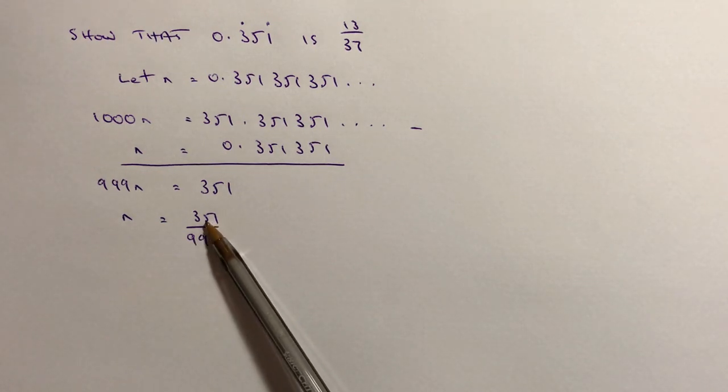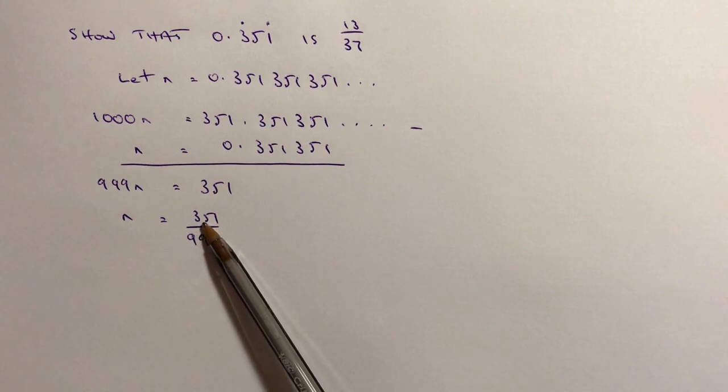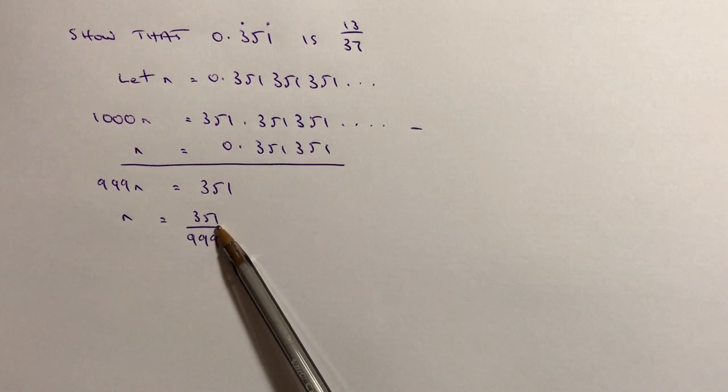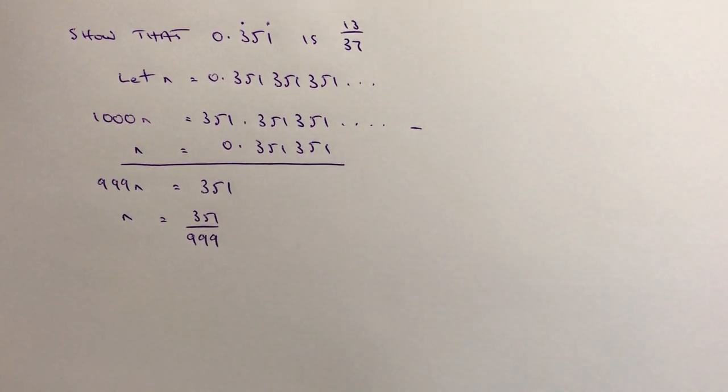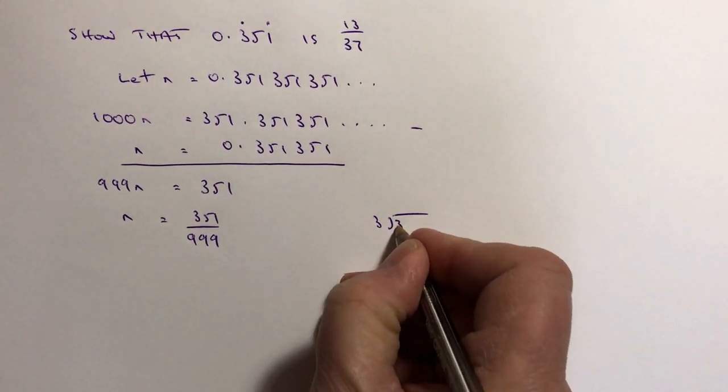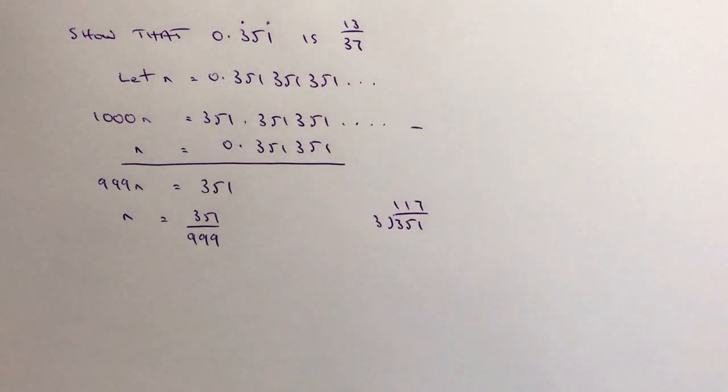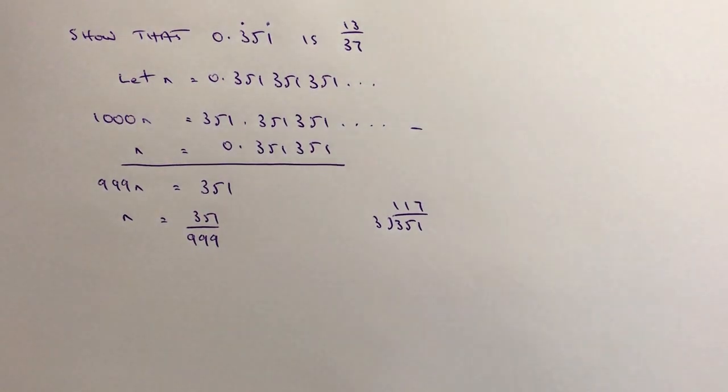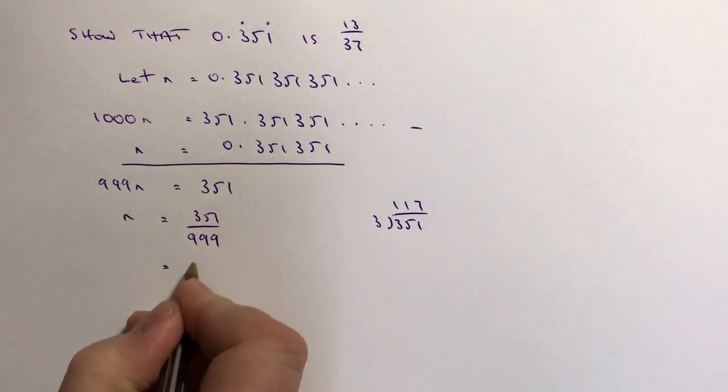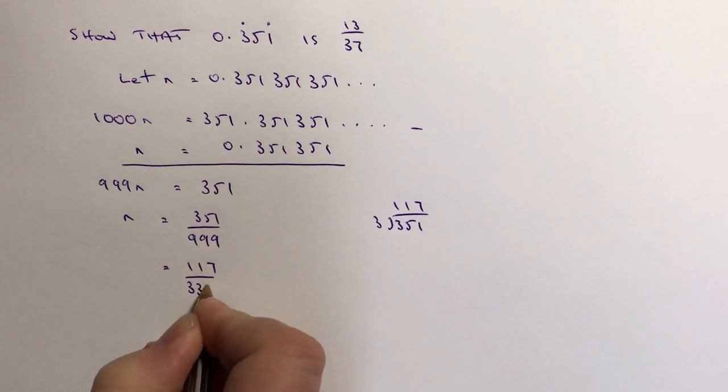So if I have 3 plus 5 is 8 plus 1 is 9. Well, 9 is a multiple of 3. So actually, I can be fairly confident that if I divide the top number by 3, what I end up with is 117, which is great as a whole number. So therefore, I can write this as 117 divided by 333.